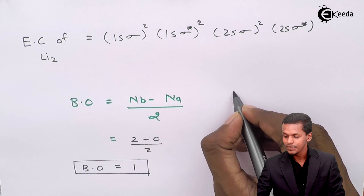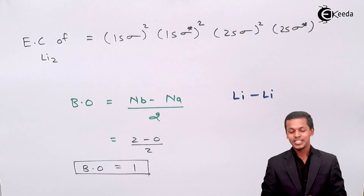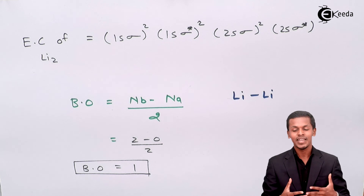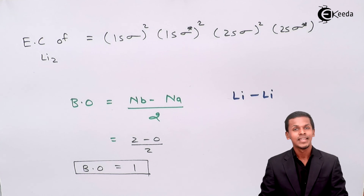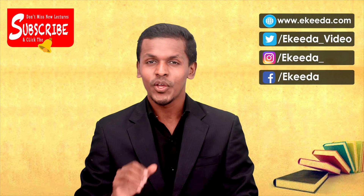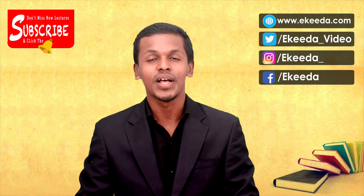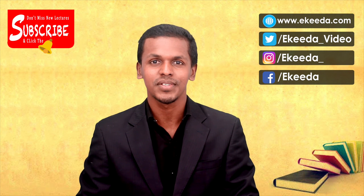So in this lecture we have discussed various things — not only atomic orbitals, but also molecular orbital energy levels, electronic configuration, and bond order. Thank you friends for watching. I hope you understood this video clearly and learned the concepts behind it. Please share this video with your friends and don't forget to subscribe to the eGeta channel. Thank you so much.